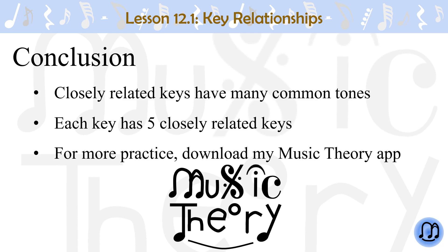Conclusion. In this lesson, we learned that closely related keys are a pair of keys that have many common tones, and that each key has five closely related keys. For more practice, please download my Music Theory app. In the next lesson, we are going to talk about pivot chord modulations. See you next time!